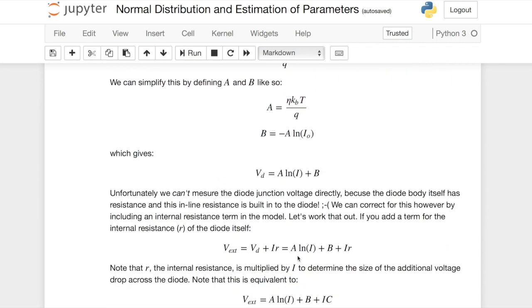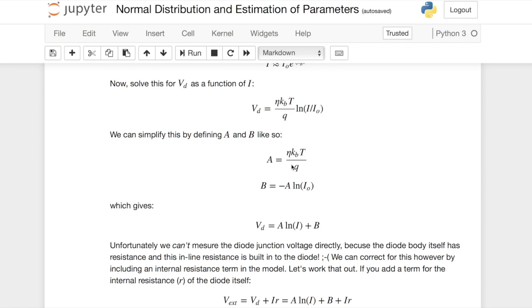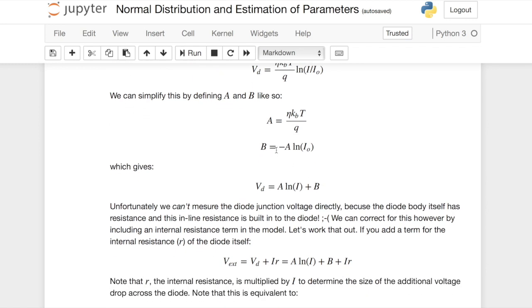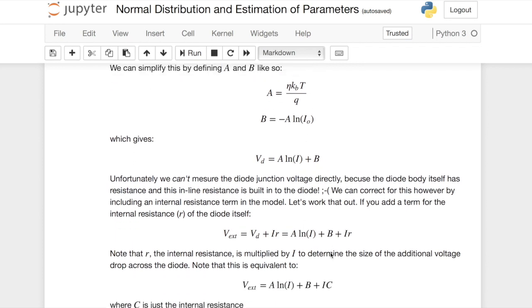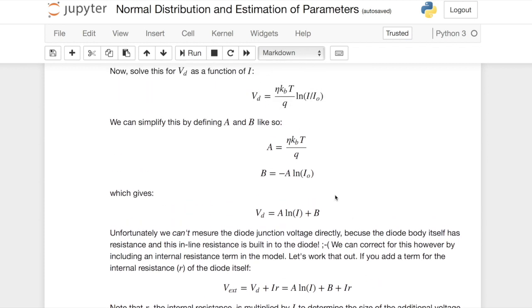The way A shows up, it's multiplied by the log of the current. So logs are unitless, so A must have units of volts, right? So A is in units of volts. B also must be in units of volts because it's A times a log. And C, of course, has units of ohms because C times a current is equal to a voltage. So C is in units of ohms. A and B are both in units of volts.